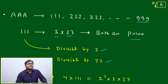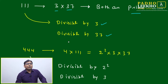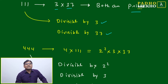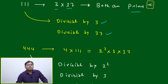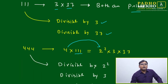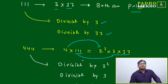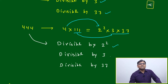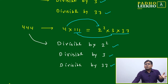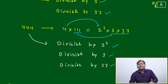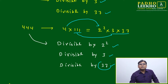Now let us look at the next pattern numbers like 222, 333, or 444. Take 444: you can write it as 4 × 111, and then 4 = 2² while 111 = 3 × 37 is fixed. So 444 is divisible by 2², by 3, and by 37. Our key observation is: any number in the form of AAA will always be divisible by 37.